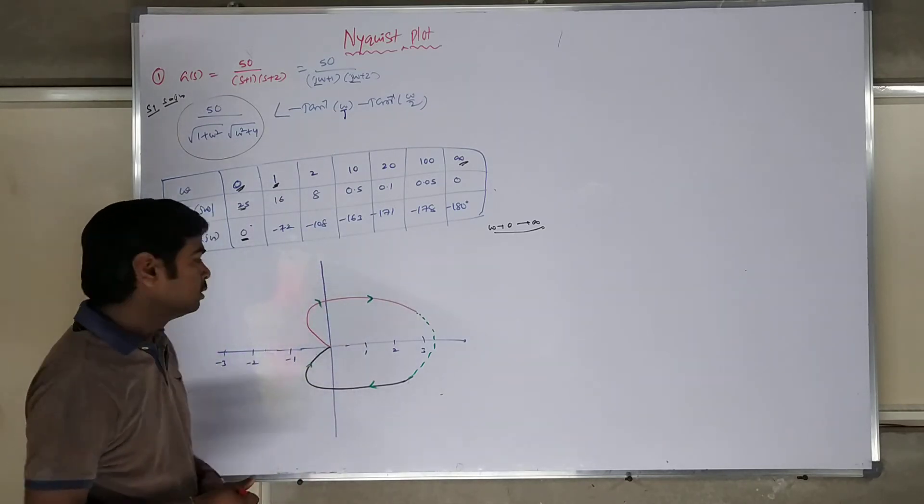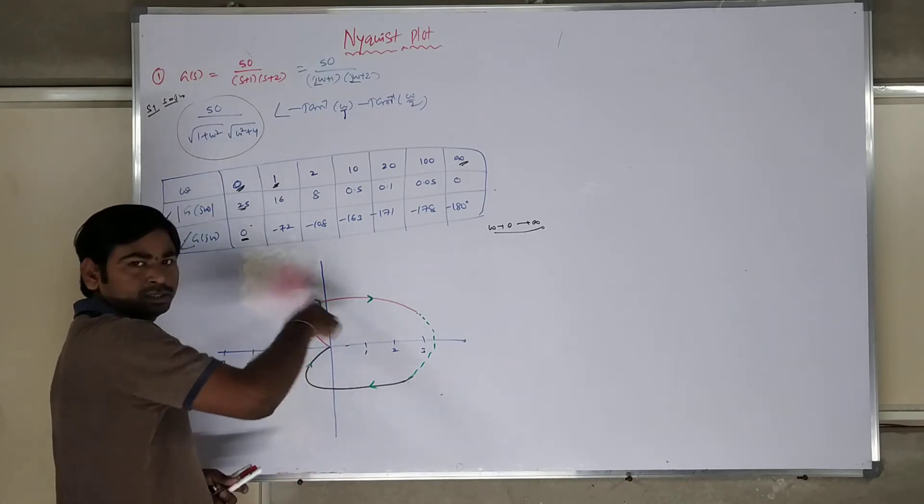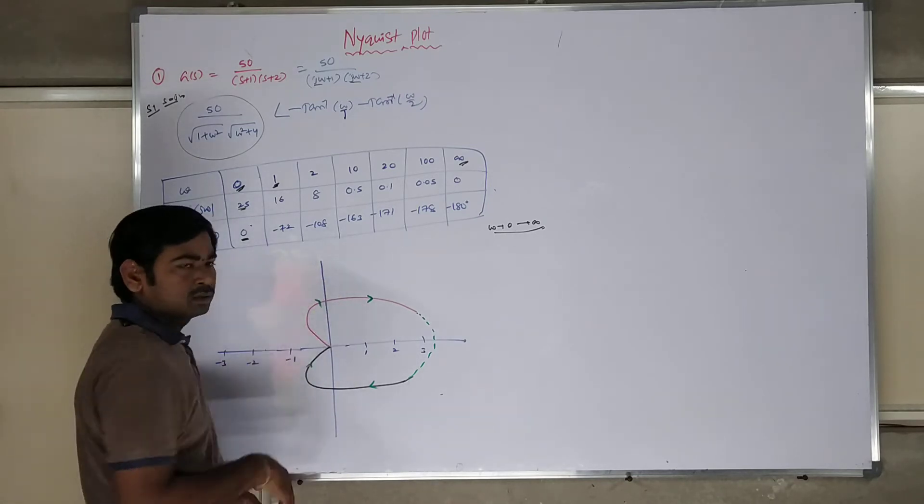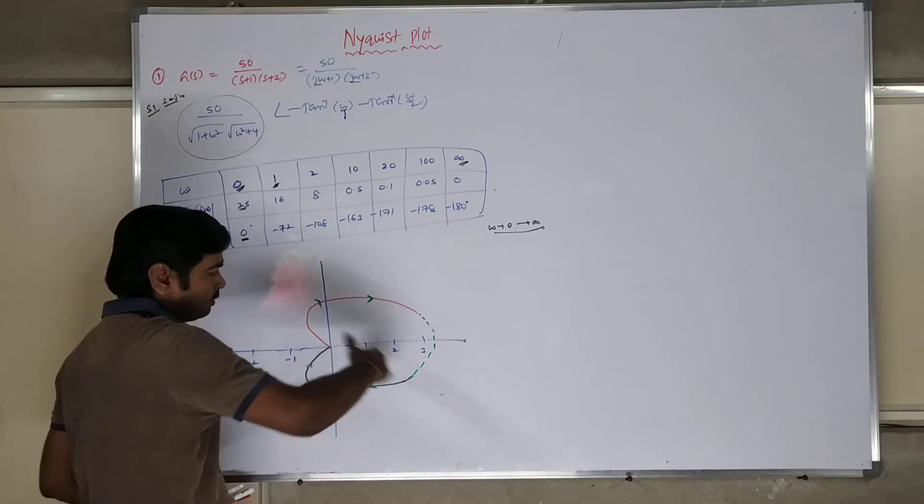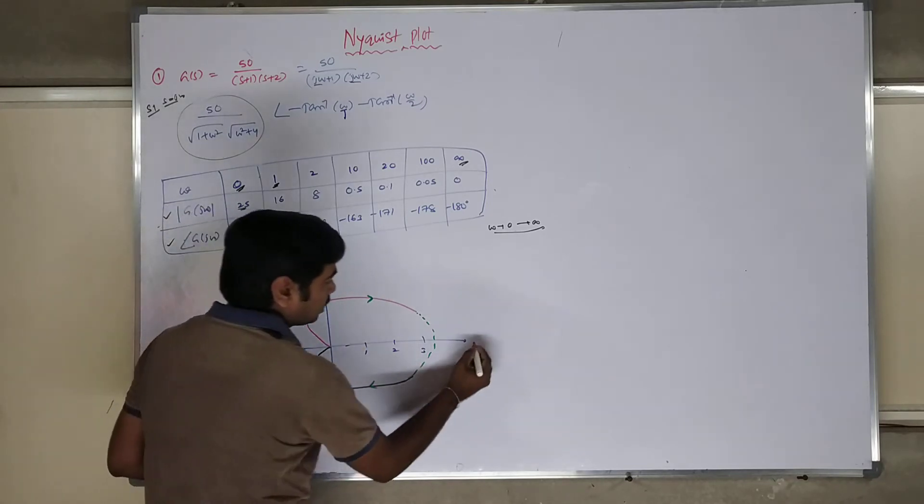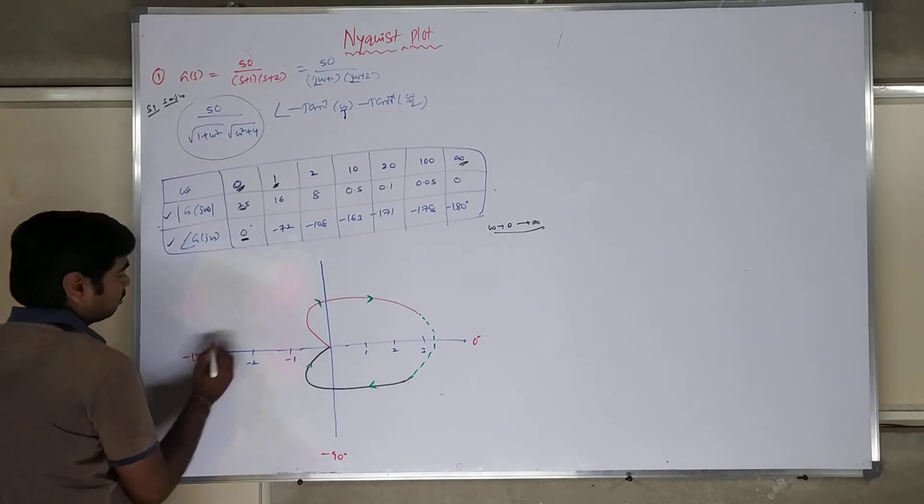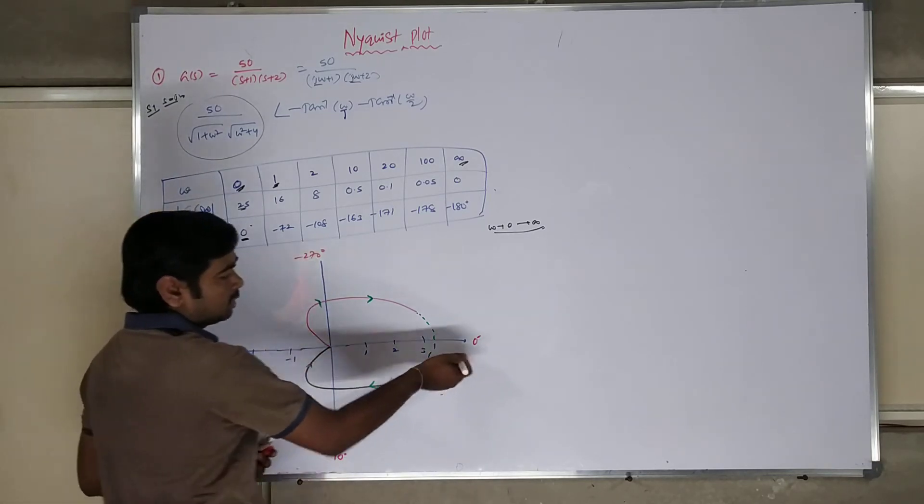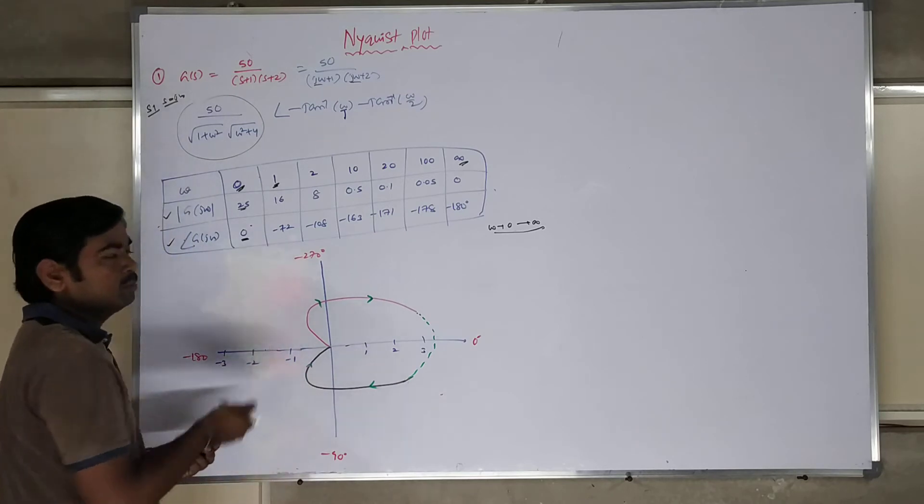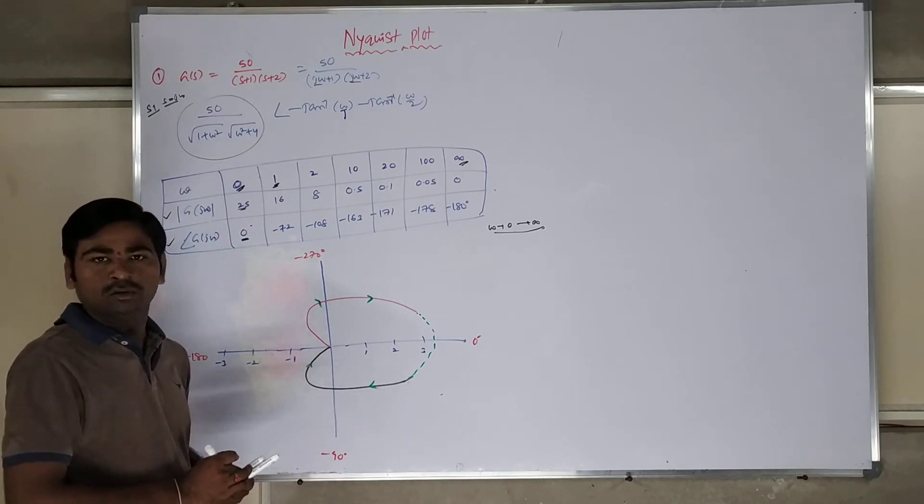After that, what you have to do? So, you have circles. Circles are the magnitudes. This will be having angles. This is 0 degrees. This is minus 90 degrees. Minus 180. Minus 270. This is the negative angle. That's why I took negative angles.